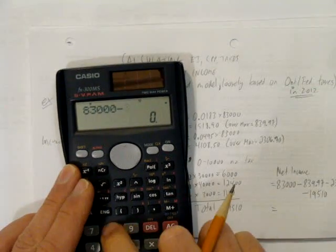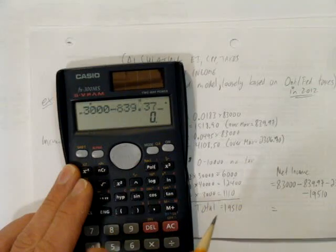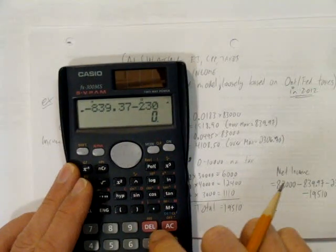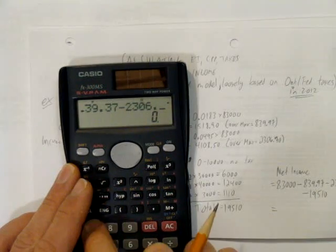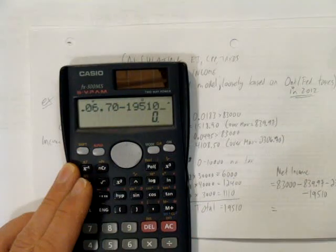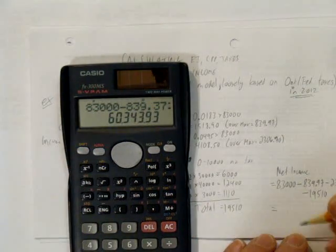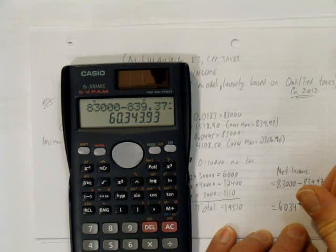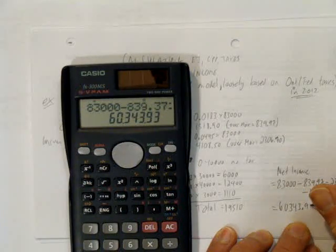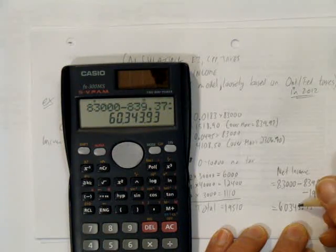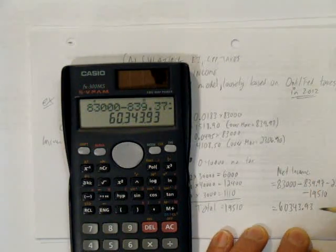They contribute $839.97 to employment insurance, $2,306.70 to the Canadian pension plan, and $19,510 to income tax. And so, their net income, that is, the salary they get to take home, is $60,343.93.